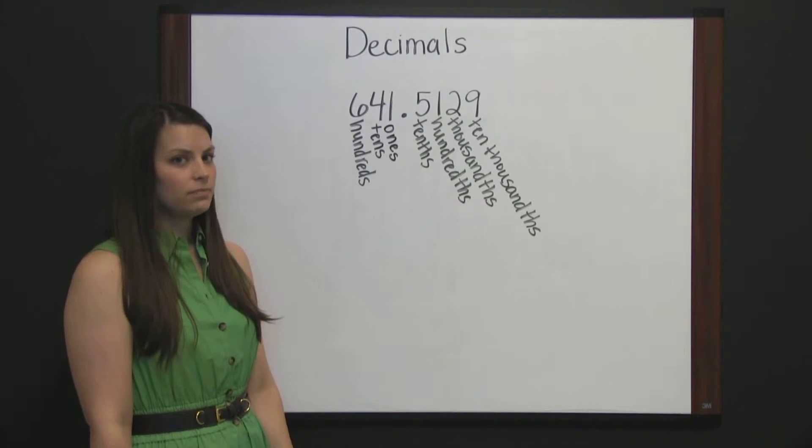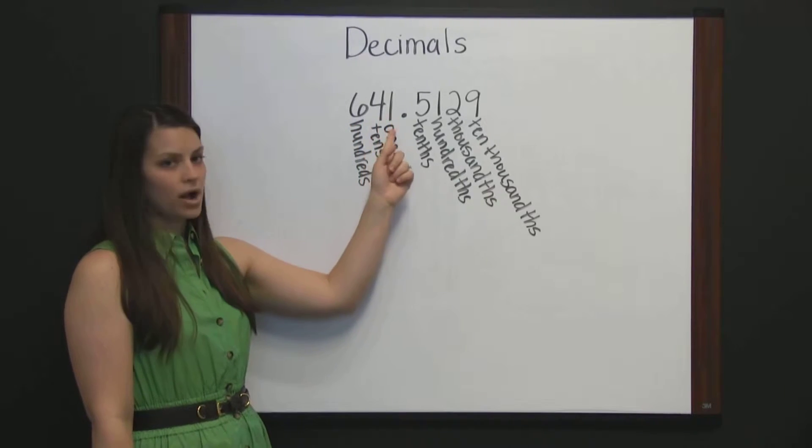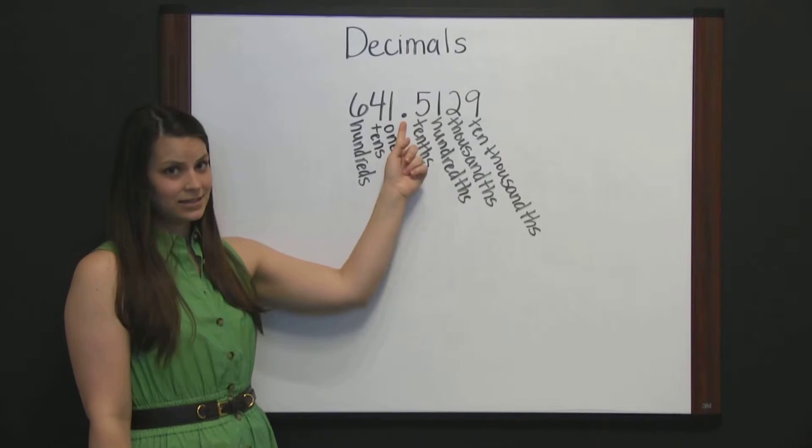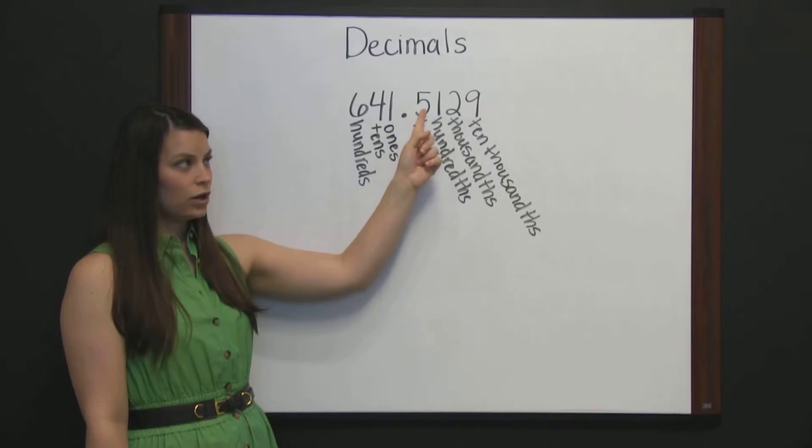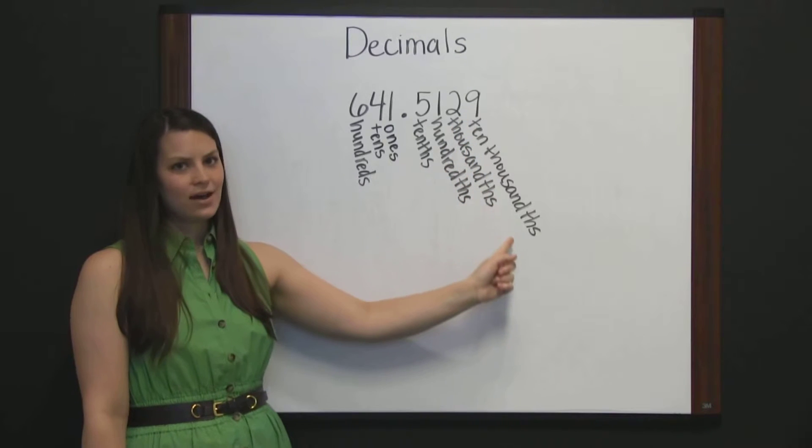So this number would be read as 641 and 5129 ten thousandths.